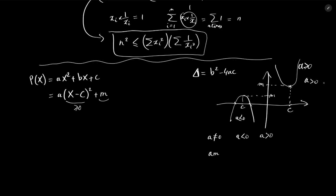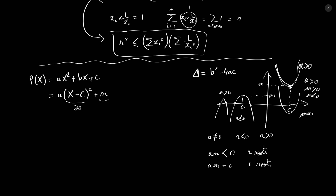If A is strictly positive and M is strictly positive, the parabola never crosses the axis, so there are 0 roots. If A is strictly positive and M is negative, the parabola crosses the axis in two points, giving 2 roots. If M equals 0, the parabola touches the axis at exactly one point, giving 1 root. When A is strictly negative, the reverse applies for M. So the condition for exactly two roots is that A·M must be strictly negative; A·M = 0 gives one root; A·M > 0 gives zero roots.